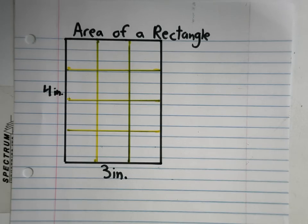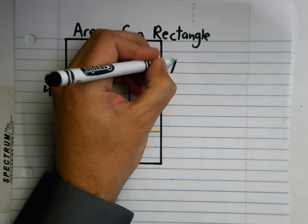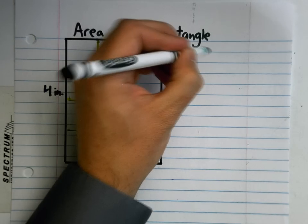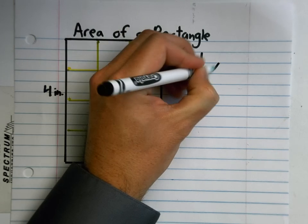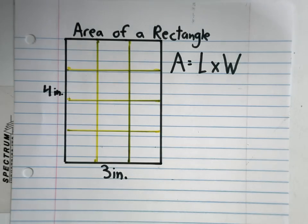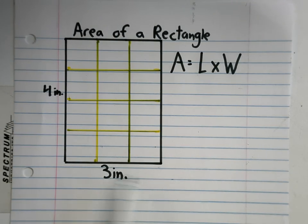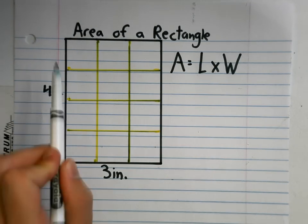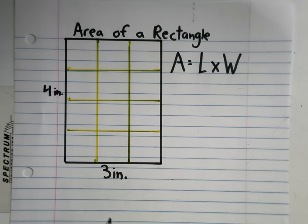So we're going to start with a rectangle or a square - they're the same thing. The formula for the area of a rectangle, area equals length times width. So I made this rectangle right here, and I used my ruler, and I know that it's three inches wide and four inches long. I know that.